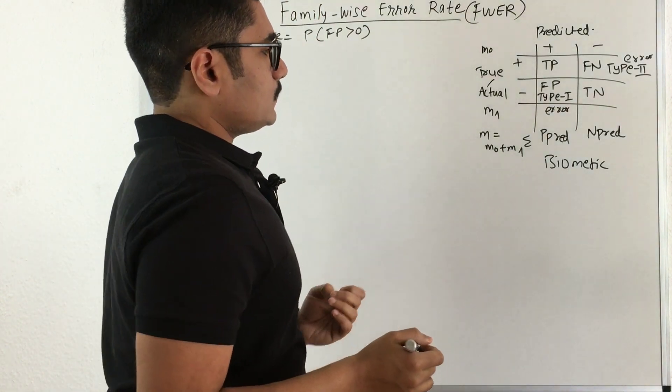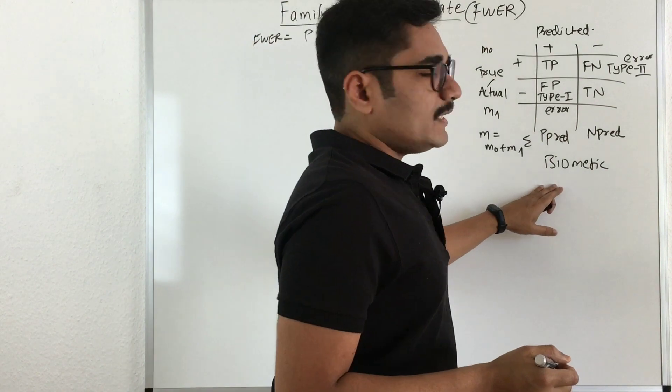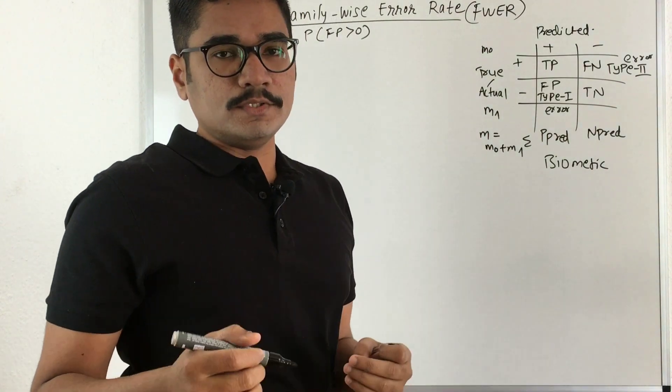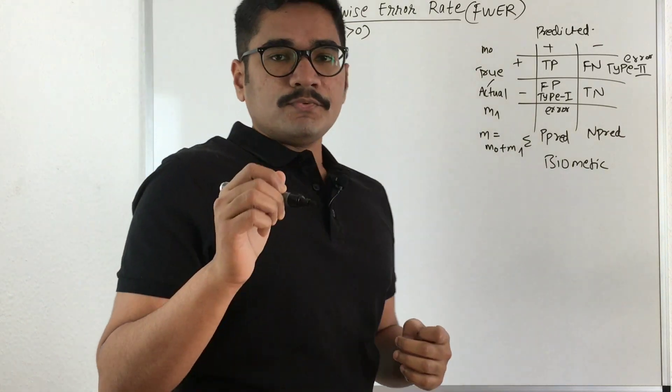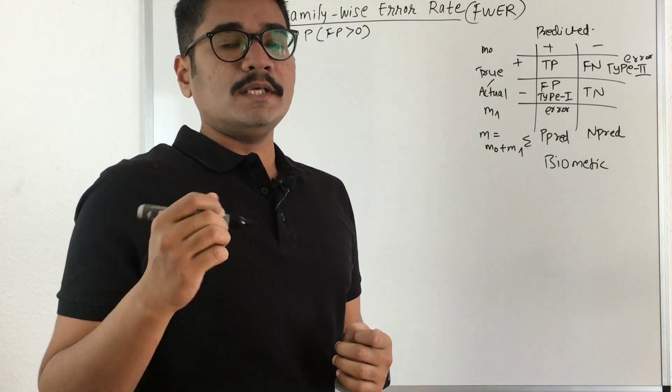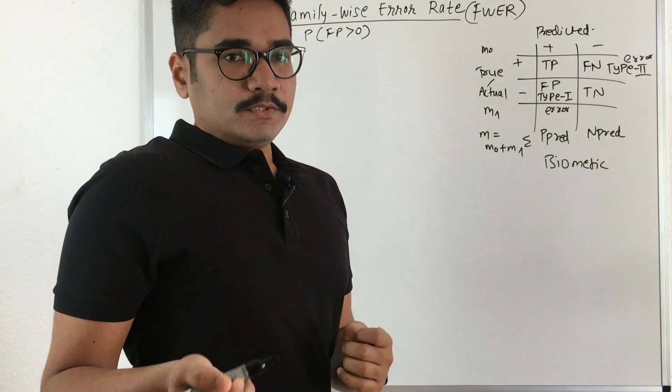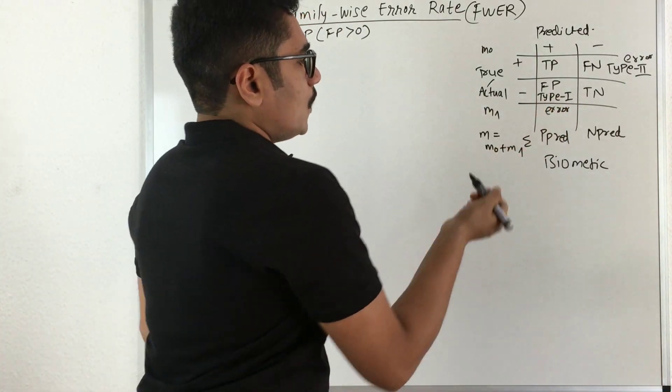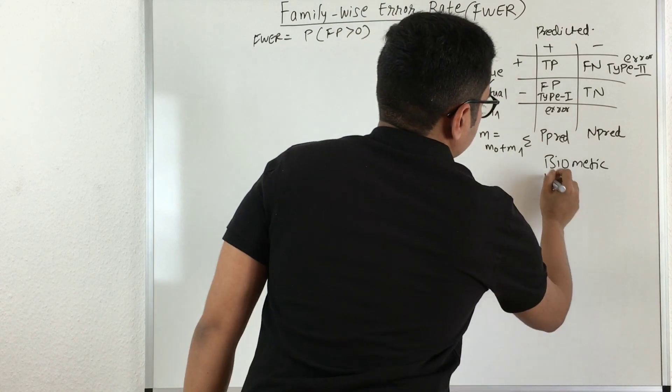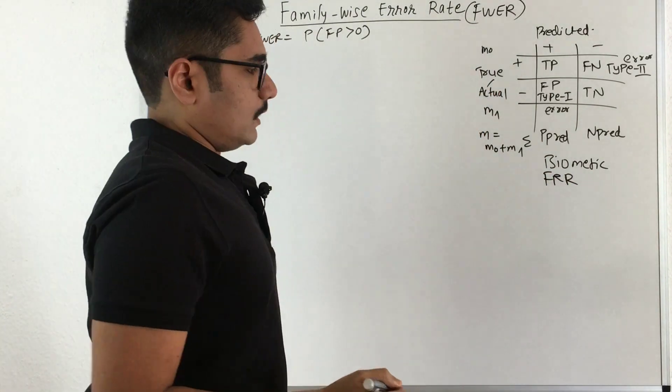Now what this system does is it should give authentication to all those students or users who have enrolled at this university. But if a user or a student is there but he has been rejected, in that case we consider it as the false positive. Also in biometrics, it is called false rejection rate, that is FRR.